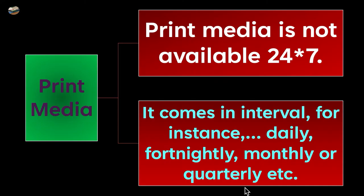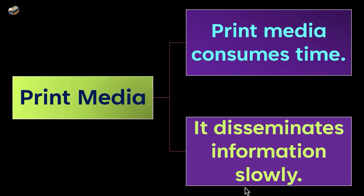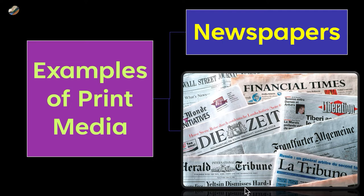Print media is time-consuming and disseminates information slowly, meaning the information it spreads takes time to reach people. The most famous example of print media is newspapers, and we can see different types of newspapers.